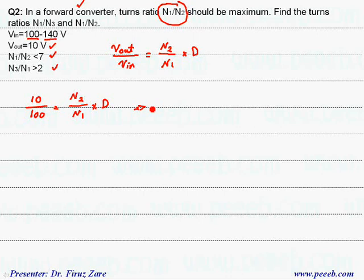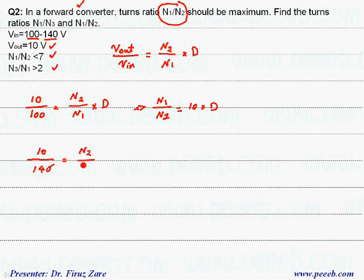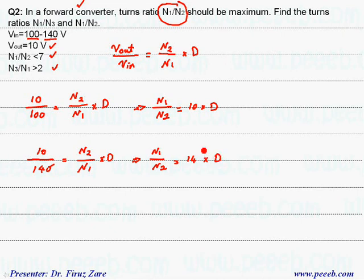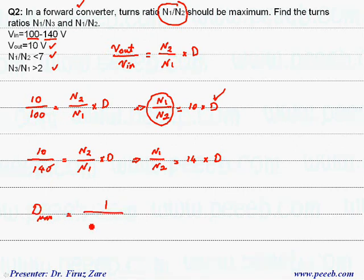That means N1 divided by N2 equals 10 times the duty cycle. When the input voltage is maximum, 10 divided by 140 equals N2 divided by N1 times duty cycle. In this case, the turns ratio N1 over N2 equals 14 times the duty cycle. To maximize N1 over N2, the duty cycle should be maximum. The maximum duty cycle equals 1 over 1 plus N3 divided by N1.